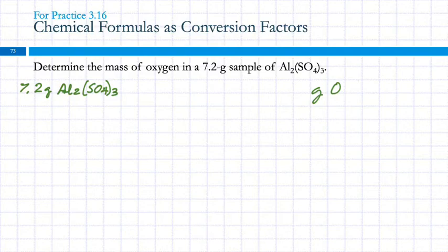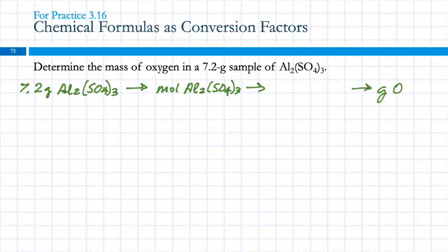So I'm trying to find grams of oxygen. I can't go directly. If I was given the mass percent, I could, but I don't have that. I could calculate it, but it really wouldn't be any faster than doing it using the chemical formula as a conversion factor. So from grams of the compound, what can I find? I can use the molar mass and find moles of the compound. From moles of compound, can I find moles of oxygen? Yeah, just by looking at the formula. And then from moles of oxygen, I can find grams of oxygen using the molar mass of oxygen.